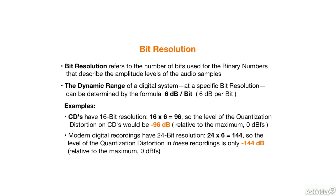Even on CDs, most of the time the quantization distortion would be covered up by the music. But when the music gets really quiet — like at the end of a fade-out, at the end of a song — you might hear the audio become more and more distorted, especially over headphones, as the song fades down to minus 96 dB.